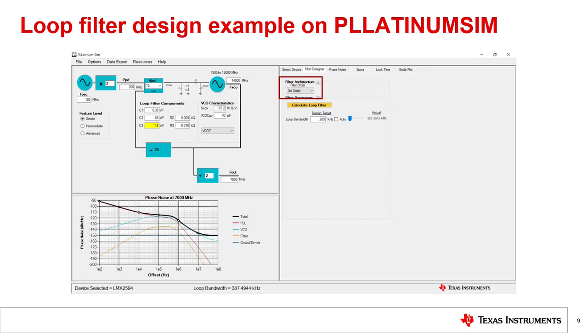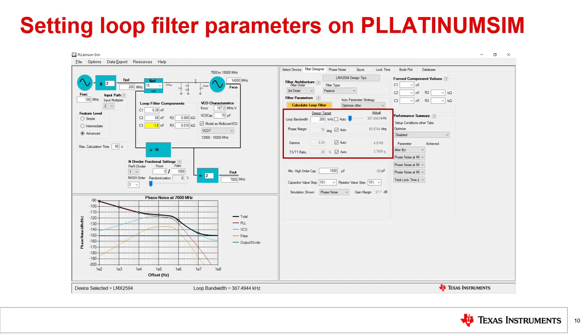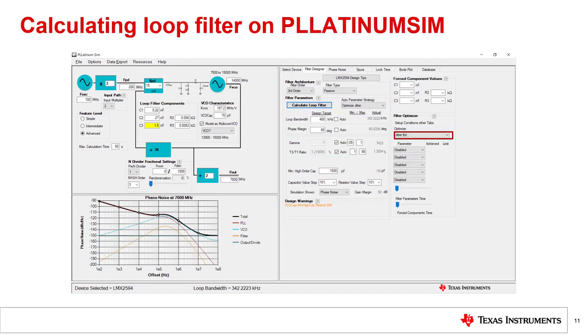The order of the loop filter can be modified here. Set the loop filter order to third order. All the loop filter parameters we discussed in the PLL loop filter design training videos - loop bandwidth, phase margin, gamma, and pole ratio - can be specified here. Currently, T3 over T1 is the only pole ratio available. If we switch to a fourth order loop filter, T4 over T3 pole ratio will also be available. Let's design the loop filter to have a loop bandwidth of 400 kHz and a phase margin of 60 degrees, optimizing for jitter.